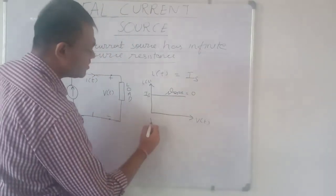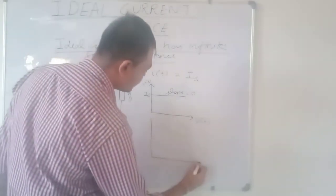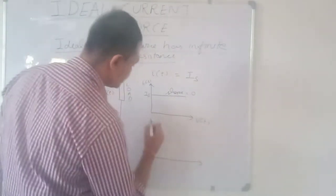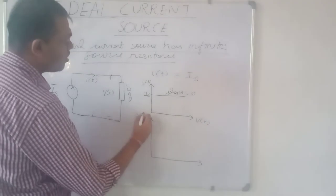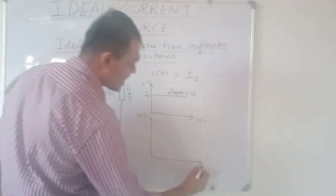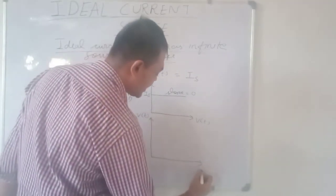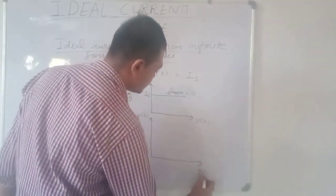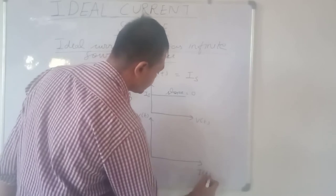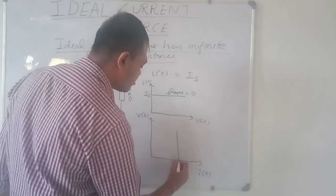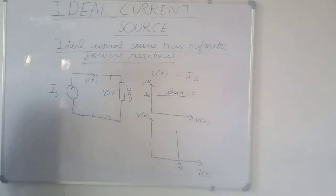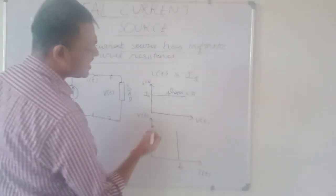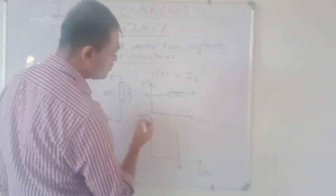If we draw the VI characteristic curve, with Vt on the Y axis and It on the X axis, then It is always equal to Is, so this is a vertical line parallel to the Y axis.